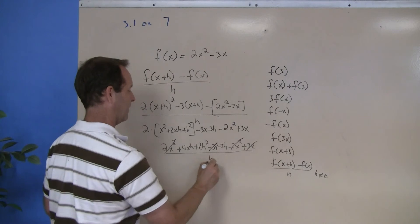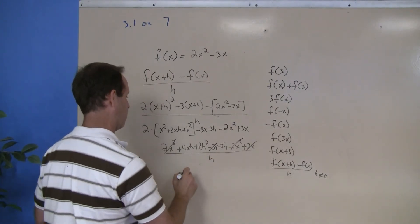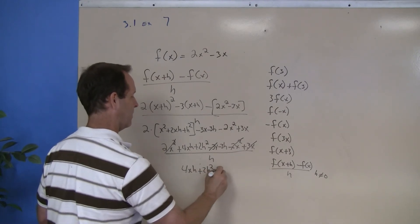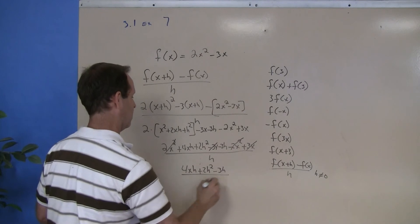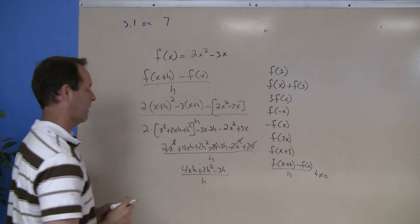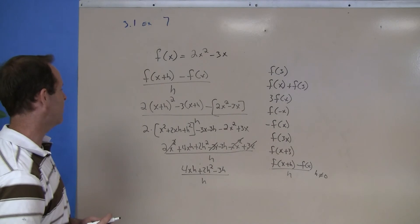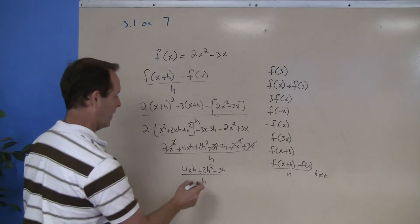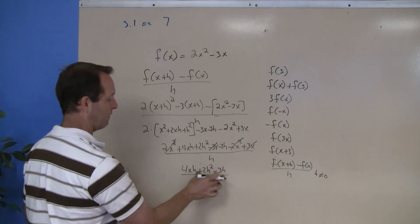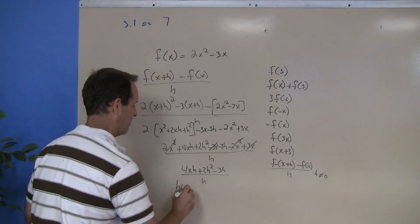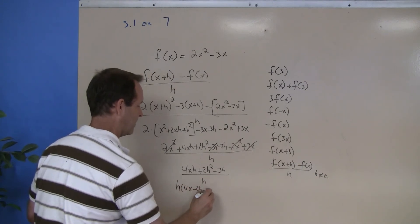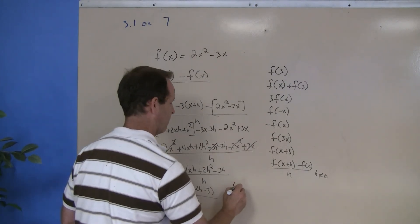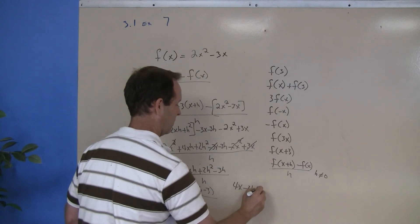Remember this is all over h, and what's left is a 4xh plus a 2h squared minus a 3h all over h. I'm just looking at it just to make sure things are popping out and I'm satisfied with where this is going. I can factor an h out first, so I'm left with h times (4x plus 2h minus 3) all over h. Those h's cancel, so I'm left with 4x minus 2h minus 3.